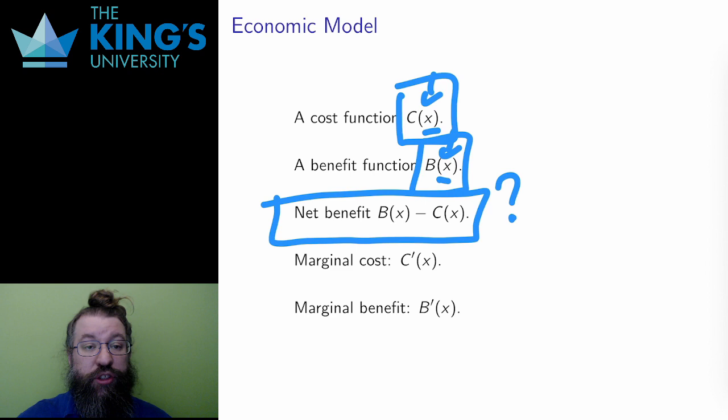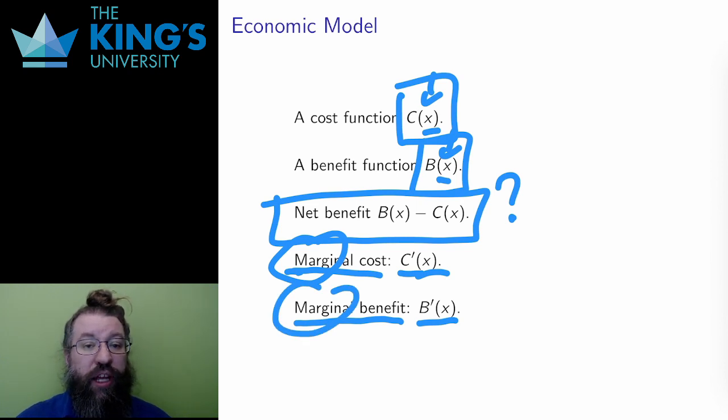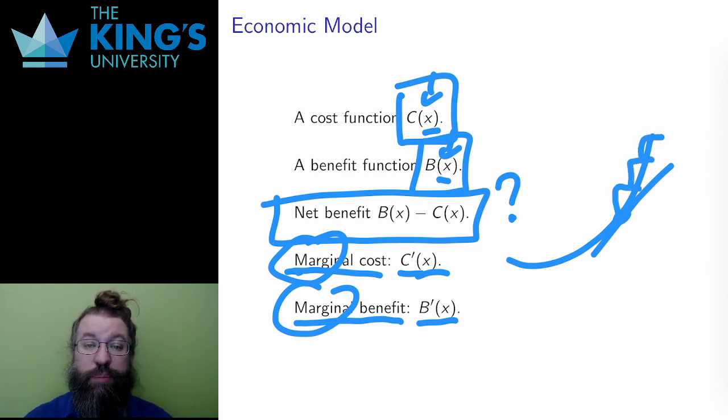The derivatives in this situation have special names. The derivative of benefit is called the marginal benefit, and the derivative of cost is called the marginal cost. Marginal here means on the margin, what happens for the next unit. This is an interesting interpretation of the slope of the tangent line. The slope is the rate of increase, and that can be approximated as how much cost or benefit will come from the next unit. And that's the main idea about this whole marginal analysis, and I'll return to that idea in a bit.